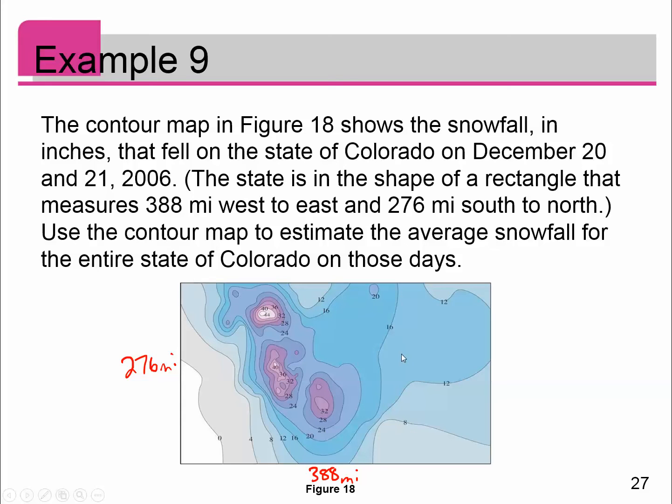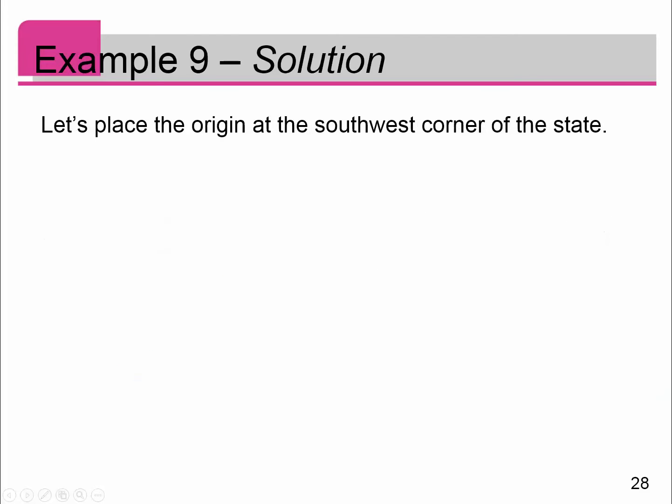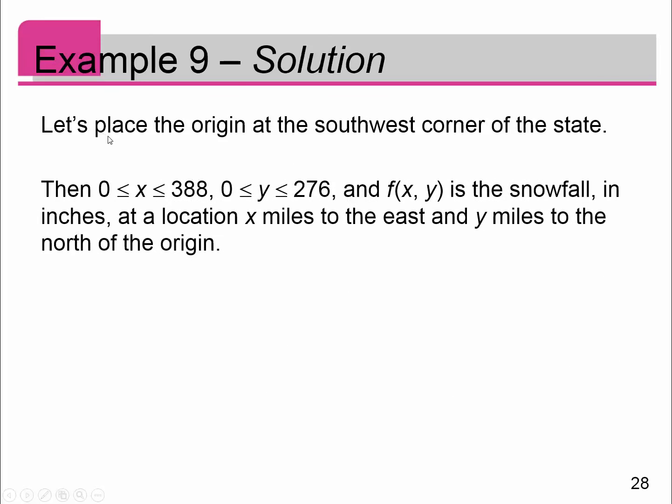If I had a formula for this function, I might be able to do it by integrating it. But since I don't, I'm going to do an approximation method. Let's place the origin at the southwest corner of the state. Then we're going to let x go from 0 to 388 and y goes from 0 to 276. Let f(x,y) be the snowfall located at x miles to the east and y miles to the north.